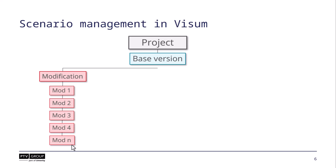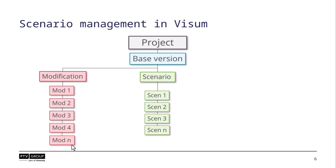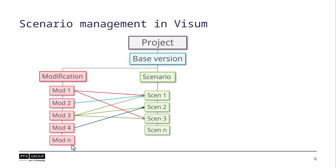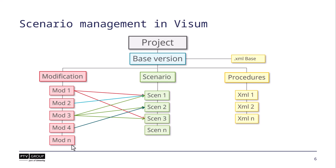Modifications can depend on each other or they can exclude each other — for example, if you test different layouts for the same intersection. A scenario consists of the base version plus any number of modifications that can be combined. Additionally, different sets of procedure parameters can be managed and used in different scenarios. Procedure parameters contain the calculation instructions for the scenario, and one procedure parameter set is allocated to each scenario.